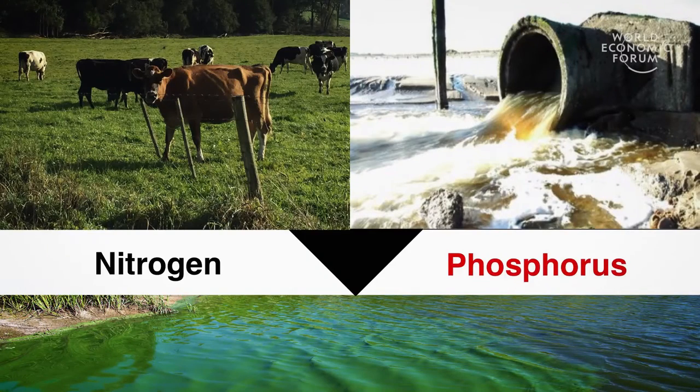Algae thrive in fresh waters where there are excess nutrients, usually from nitrogen and phosphorus. We tend to have more nitrogen than phosphorus in freshwater environments, and so phosphorus ends up being the limiting nutrient which controls the growth of algae.